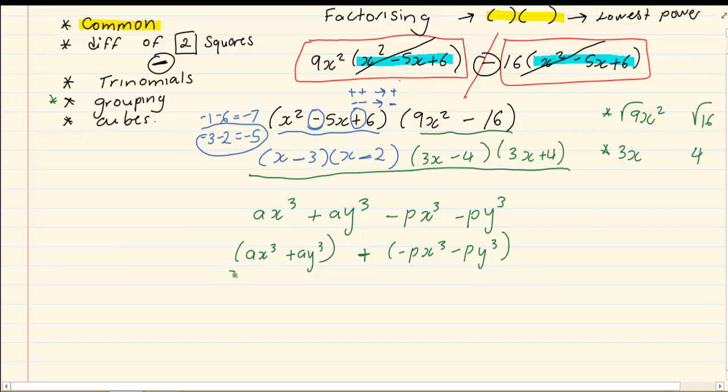Now, we are going to take out a common in the first bracket which is a. And we are left with x cubed plus y cubed. And if we take out a common in the second bracket, it is advisable to take out minus p. Because when you take out a minus p, we would end up with x cubed plus y cubed. Which would make us then be able to take out a common on the second bracket. Our common being, if we look at each term, x cubed plus y cubed.